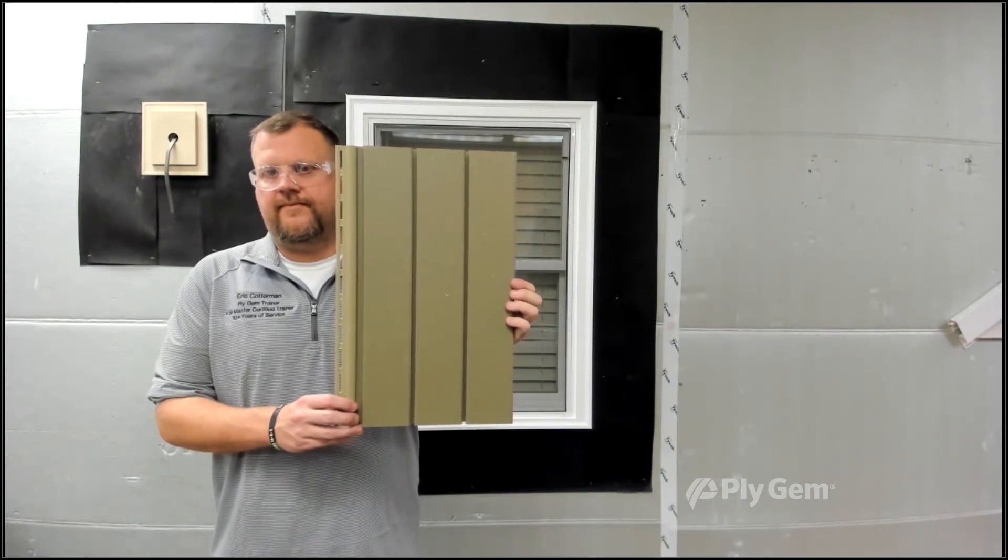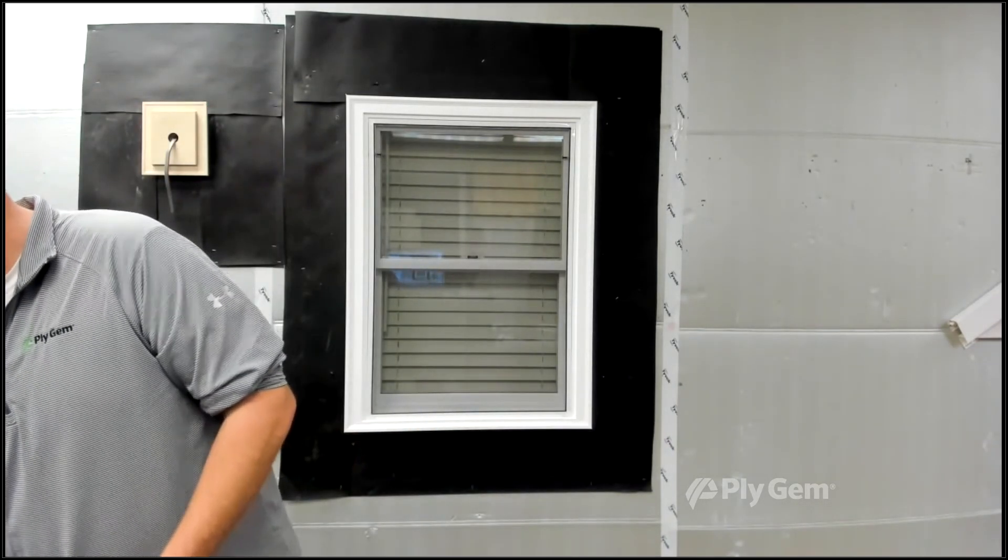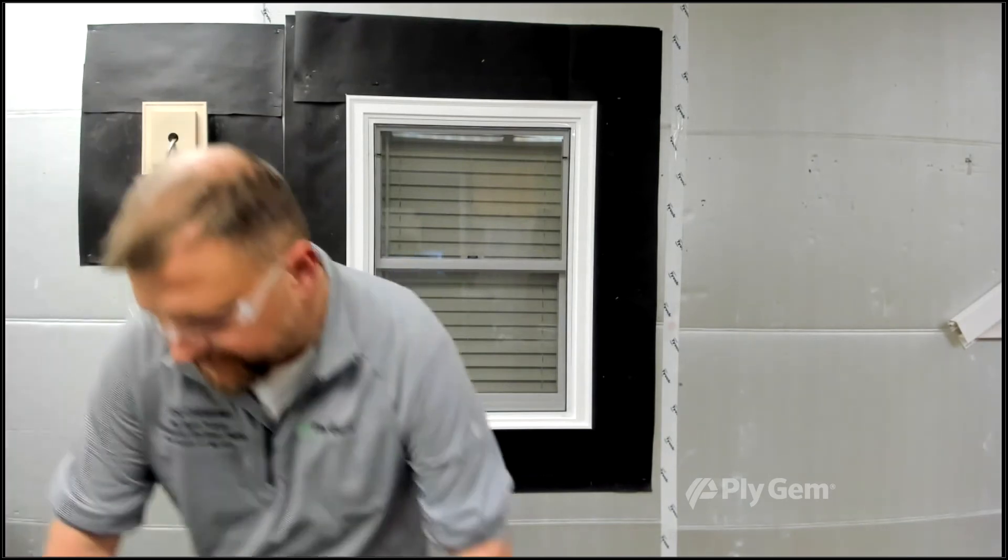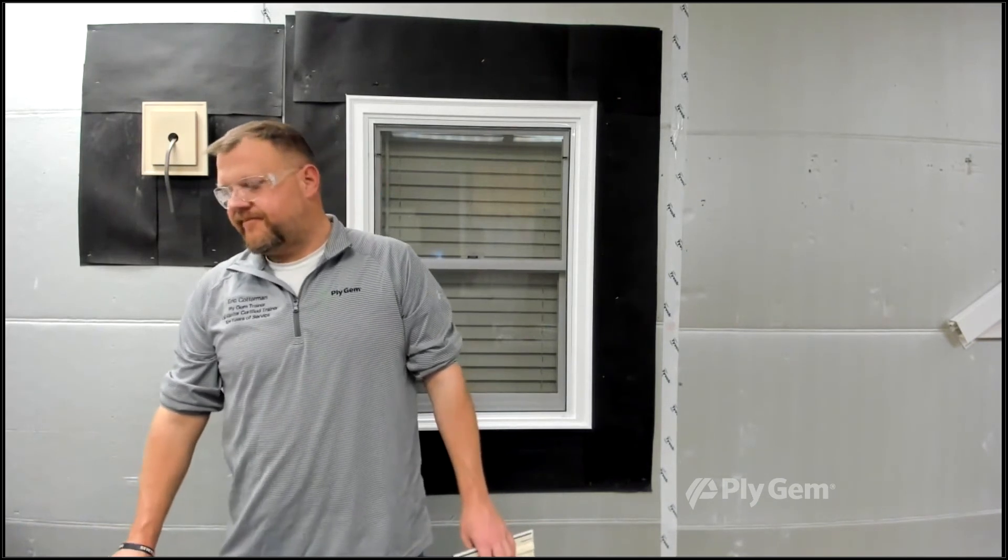Now remember, all these profiles before we show you the shakes, they come in many, many colors. Especially the standard double fours and double fives - you can be up to 40 colors in different film colors and multi colors and weathered. So always remember there's a lot of options.